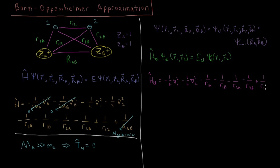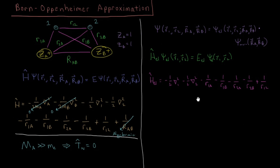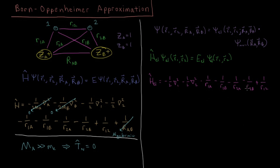Of course, the electrons also repel each other. Sometimes people include the final term — the nuclear-nuclear repulsion — in the electronic Hamiltonian, and sometimes they don't. You'll have to check your specific course on whether to include that term. I'm going to include it. Since this is just a constant, it doesn't affect what the wave functions are — it just affects the energy, adding a constant to the total energy at the end.